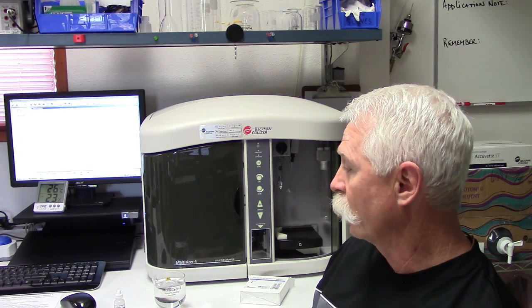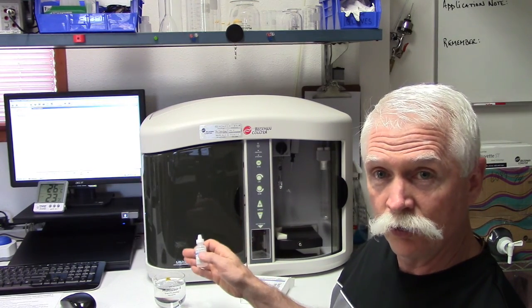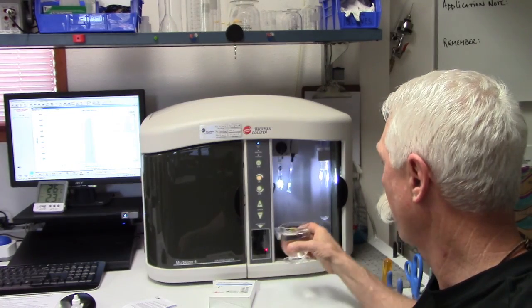You're basically going to add about 25 to 35 drops of the control standard to the beaker. Once that's done, you're going to load the beaker onto the platform.